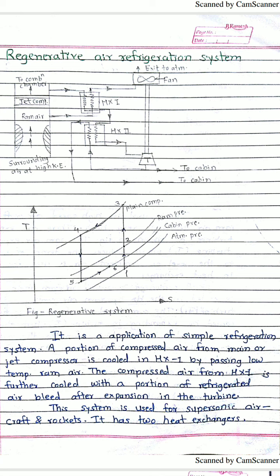One key difference: in the simple air refrigeration system there is only one compressor, one heat exchanger, and one turbine. In the bootstrap system we use two compressors, two heat exchangers, and one turbine. In this regenerative air refrigeration system we use one compressor, two heat exchangers, one turbine, and a circulation fan. As usual, the process begins with sucking in ambient air.